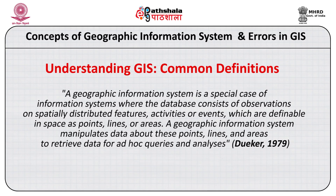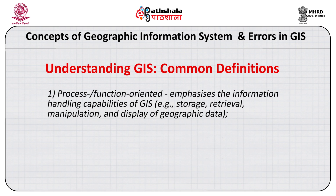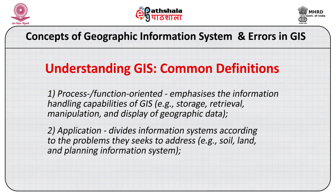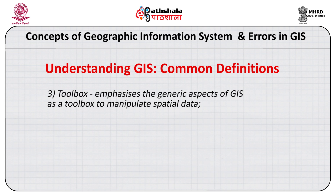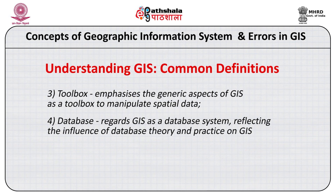That definition was given by Duker in 1979. There was one more scholar, Muguer, who in 1991 defined GIS through several points. First, process-function oriented — emphasizing information handling capabilities such as storage, retrieval, manipulation and display of geographical data. Second, applications — dividing information systems according to the problems they seek to address, for example soil, land and planning information systems. Third, toolbox — emphasizing the generic aspect of GIS as a toolbox to manipulate spatial data. Fourth, database — regarding GIS as a database system reflecting the influence of database theory and practice on GIS.